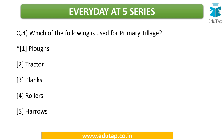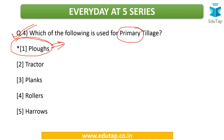Coming to the fourth question for discussion: which of the following is used for primary tillage? If you answer the first question about naming primary and secondary tillage implements, this question will also be easier. The answer is plows — the first operation is plowing. Tillage starts with plowing the field, so plows are used for primary tillage operations. The other options include rollers and harrows — we can figure out their stages when we discuss the full implements list.